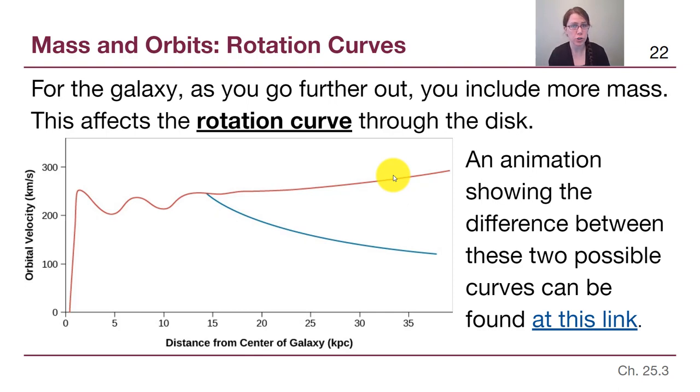What this shows us then is that there is mass in the halo of the Milky Way galaxy that is not visible. So if it's not visible mass, what might we call that?